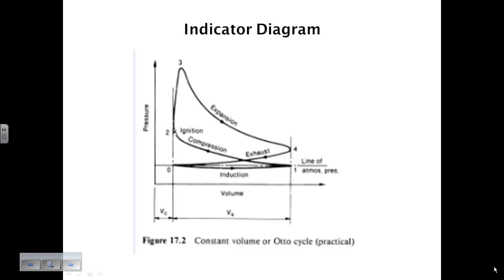The lower and smaller loop is the negative loop, since its area represents the loss of work from the engine during the inlet and exhaust operations. The negative loop is very often referred to as the pumping loop.